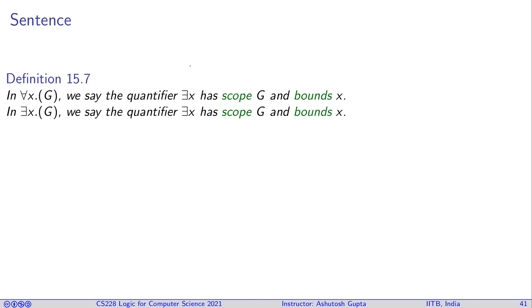Let's look at a definition of sentence. Before understanding the definition of sentence, let's understand the definition of scope. If I give you a formula like this, then we say that there exists x has a scope G. This quantification has scope until the end of this formula, and it bounds this variable x. Similarly, we have a definition for there exists and for all.